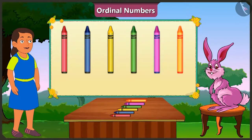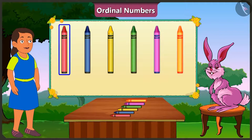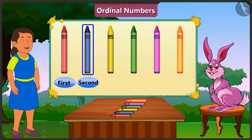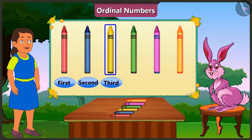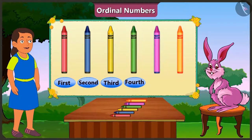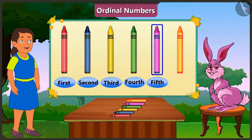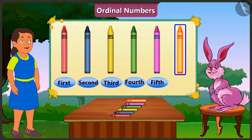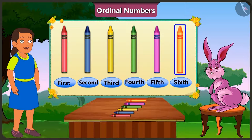This is why, in order to depict the order of crayons, we will give the first position to the red crayon, second to the blue crayon, third to the yellow crayon, fourth to the green crayon, fifth to the pink crayon, and sixth position to the orange crayon.